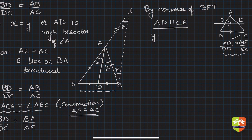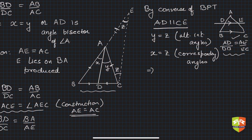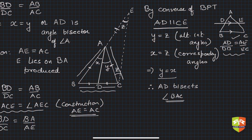The moment AD is parallel to CE, we get: y equals z by alternate interior angles, and x equals z by corresponding angles. Therefore, since y equals z and x equals z, we conclude that y equals x. Therefore AD bisects angle A. Hence proved: if a line from a vertex divides the opposite side in the ratio of the adjacent sides — BD upon DC equals BA upon AC — then AD bisects angle A. That is what the converse of this theorem says.